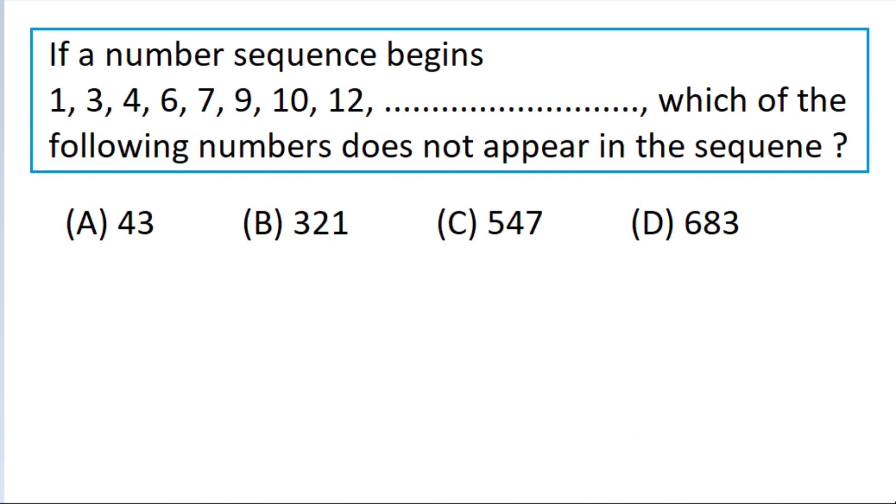43 is 3 times 14 plus 1, that is 3k plus 1, and 321 is 3 times 107, that is 3k.